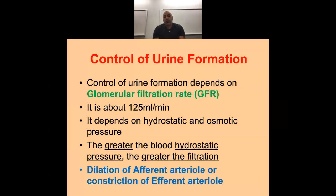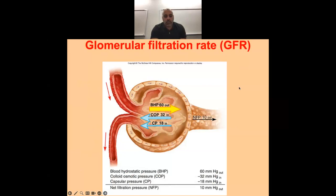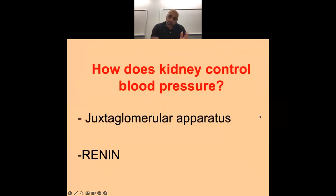GFR is 125 mLs per minute — a quarter of our cardiac output. To increase GFR, we dilate the afferent arteriole or constrict the efferent to increase pressure and send it through the nephron. For net filtration rate: glomerular hydrostatic pressure is 60, and anything else is pushback — osmotic pressure from albumin and capsular pressure pushing back. Subtract from hydrostatic to get net filtration into the nephron: 10 mmHg.